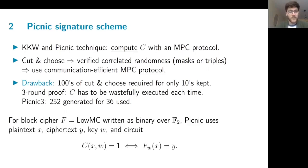Now once this is set up, the circuit that PICNIC uses is this LowMC binary circuit over F2, for which we have a plaintext X, a ciphertext Y, and a key W, and the circuit evaluates to one if and only if the block cipher produces Y on input X with key W.